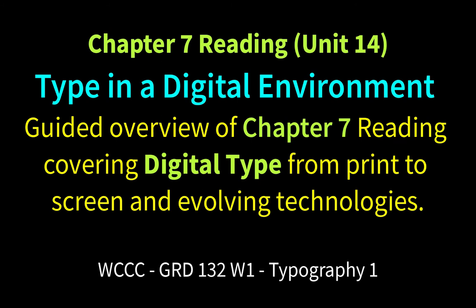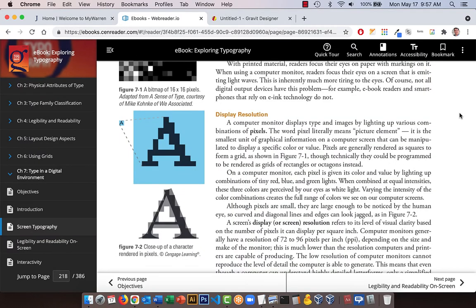Welcome GRD 132, Typography 1. I'm going to go over the chapter on digital type — called 'Type in a Digital Environment' — in your Exploring Typography eBook, just to try to clear things up in case you find it very technical. A lot of this terminology comes from the 90s and 2000s. It's more of a history of digital type, so it may not be subject matter you deal with on an everyday basis.